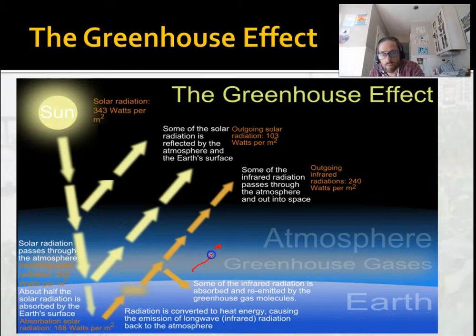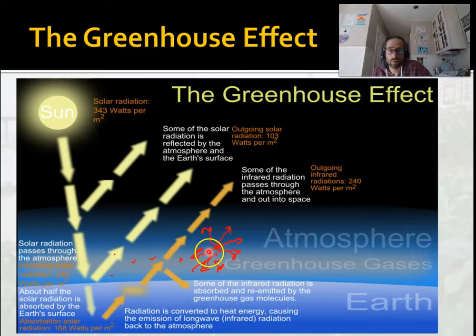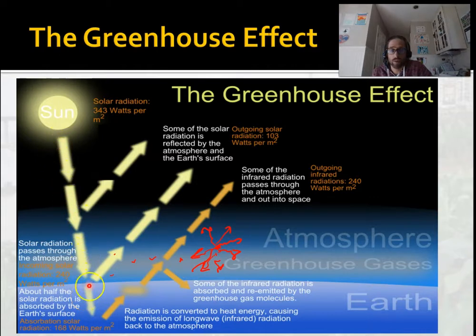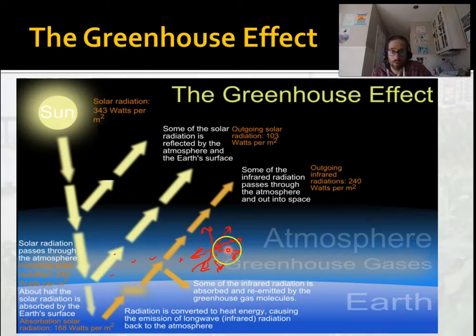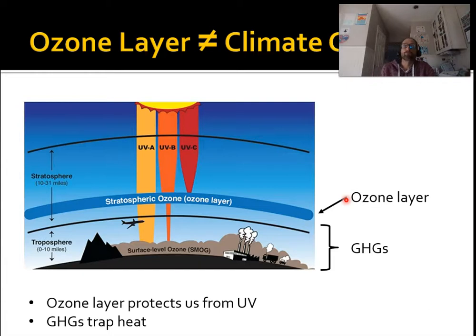The greenhouse gas molecule absorbs that radiation and then re-radiates it in all directions. Imagine hundreds of trillions of these little molecules in the atmosphere — some of this heat goes back toward the surface of the earth, keeping it warmer. So that's the greenhouse effect: shortwave radiation comes in and passes through the greenhouse gases. If reflected, it bounces back out to space. If absorbed by anything on or near the surface, it's re-radiated as longwave, and the greenhouse gases absorb and re-emit it in all directions.